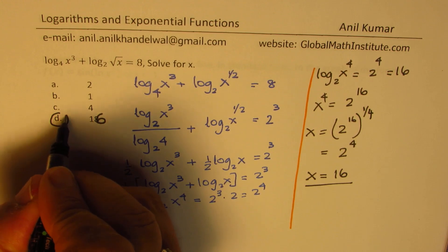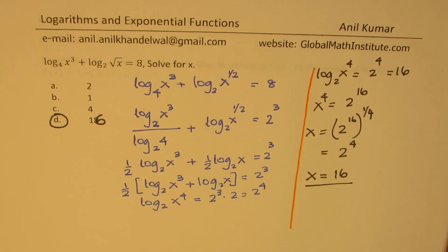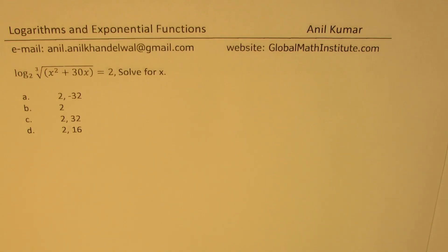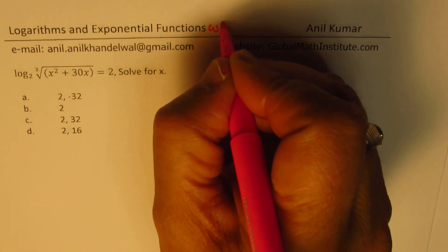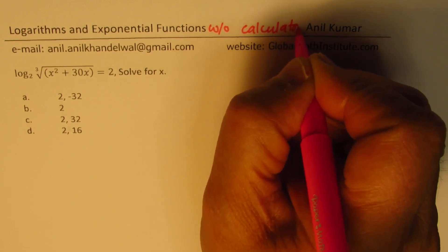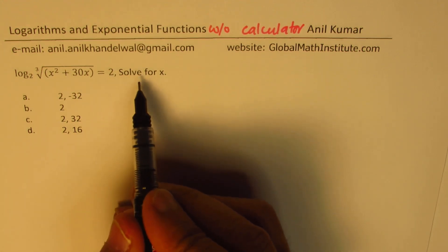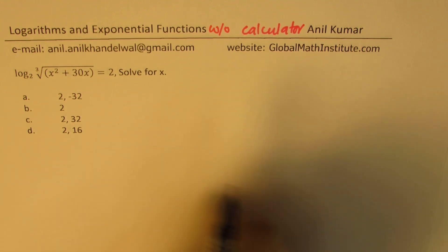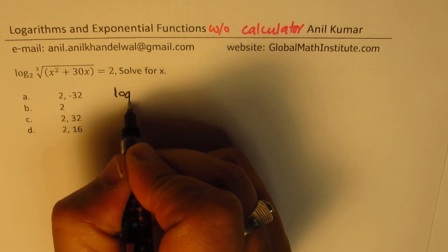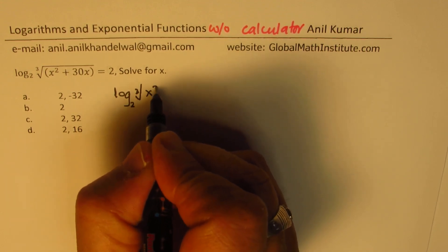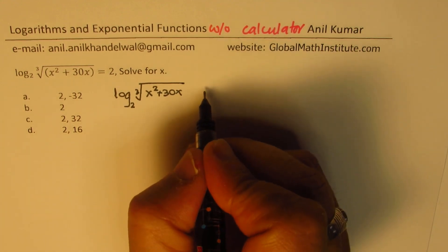So our answer is x equals 16, option D. These questions should be done without a calculator. For the next question, pause the video, copy the question, solve, and then look into my suggestions. The question is: logarithm to the base 2 of the cube root of x squared plus 30x is equal to 2. You need to solve for x.